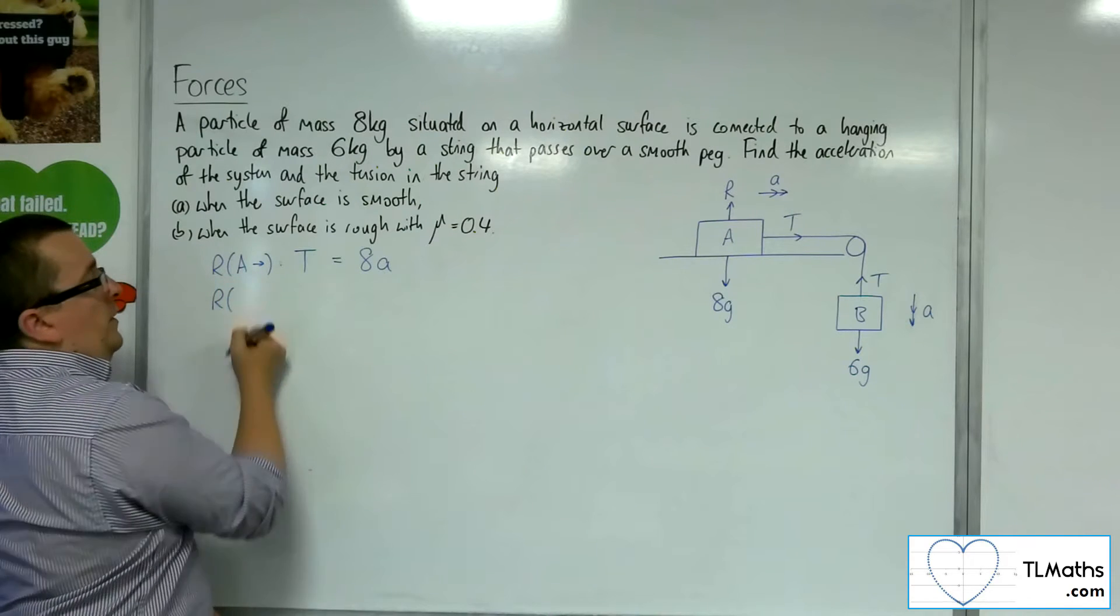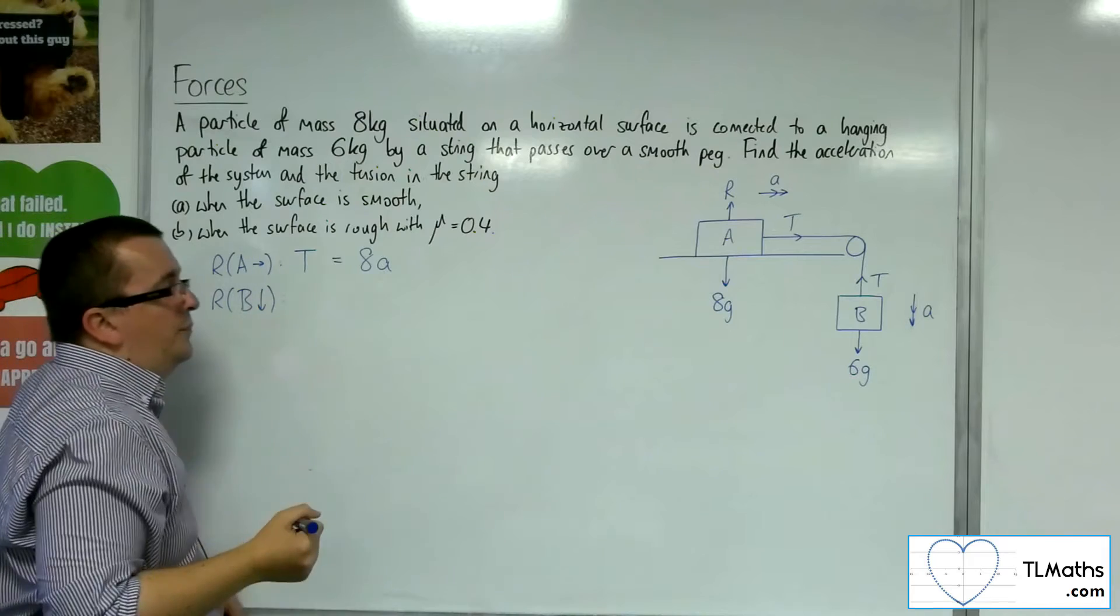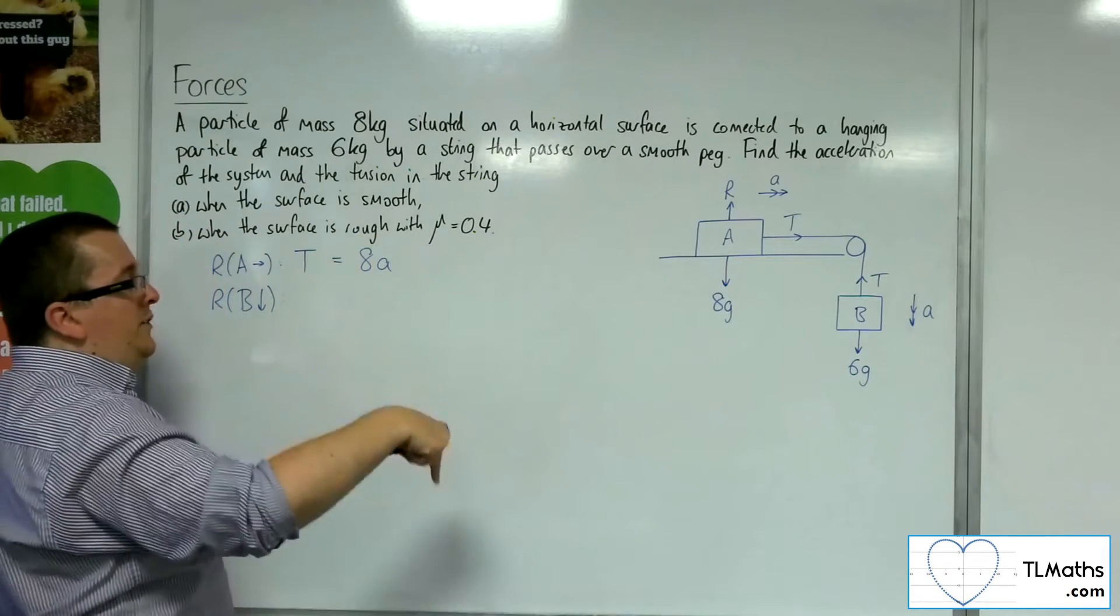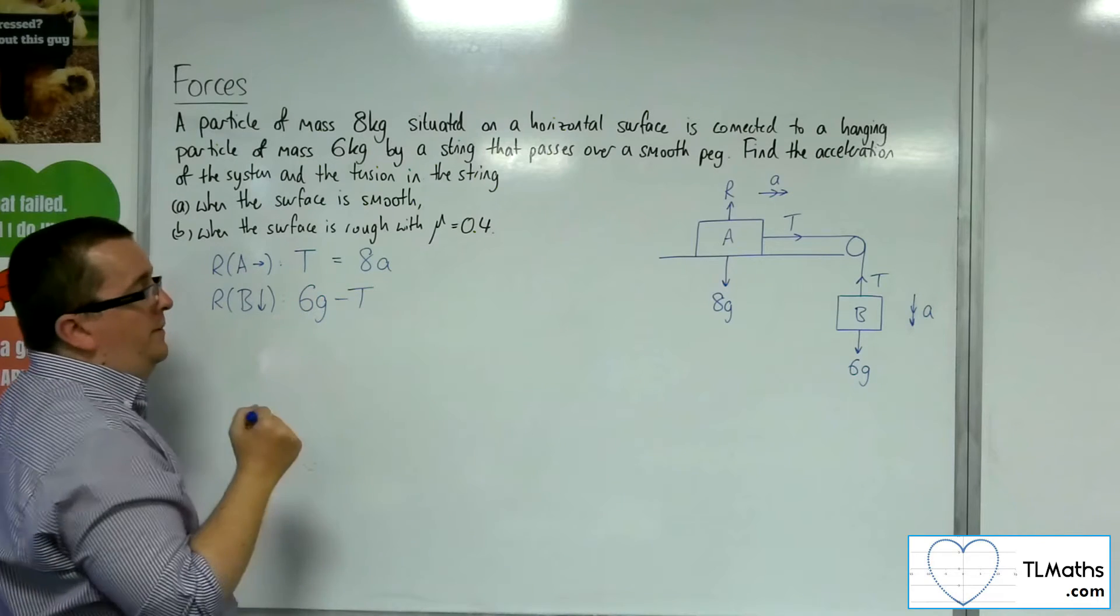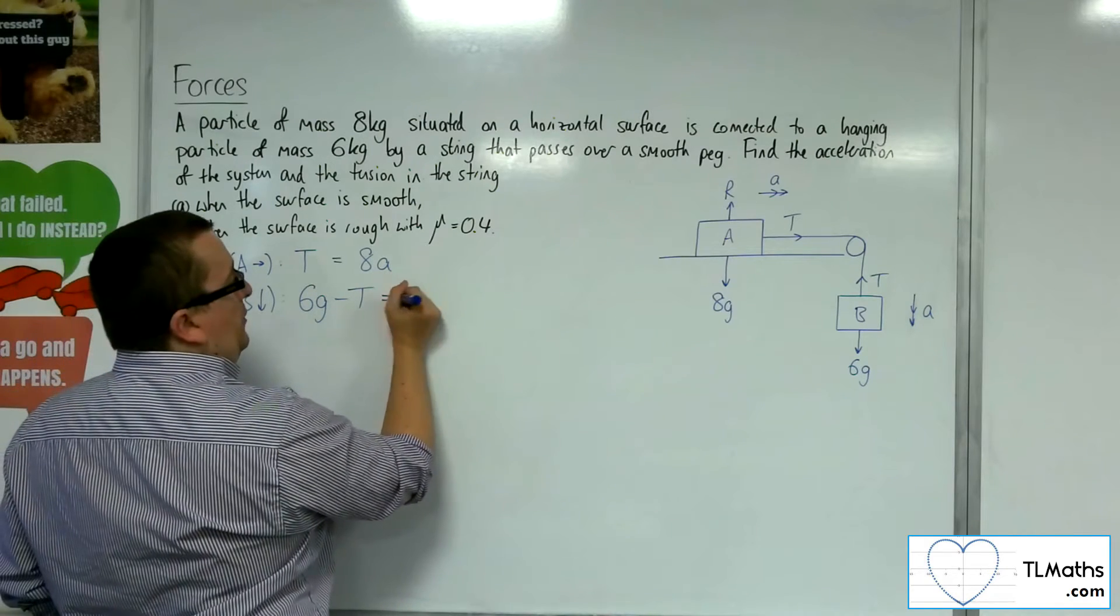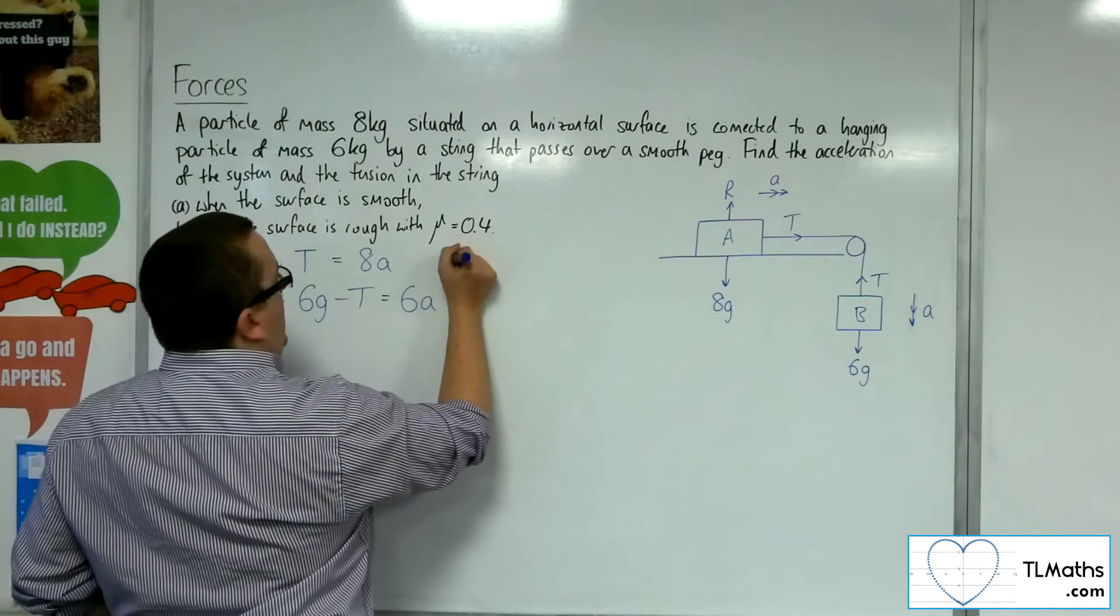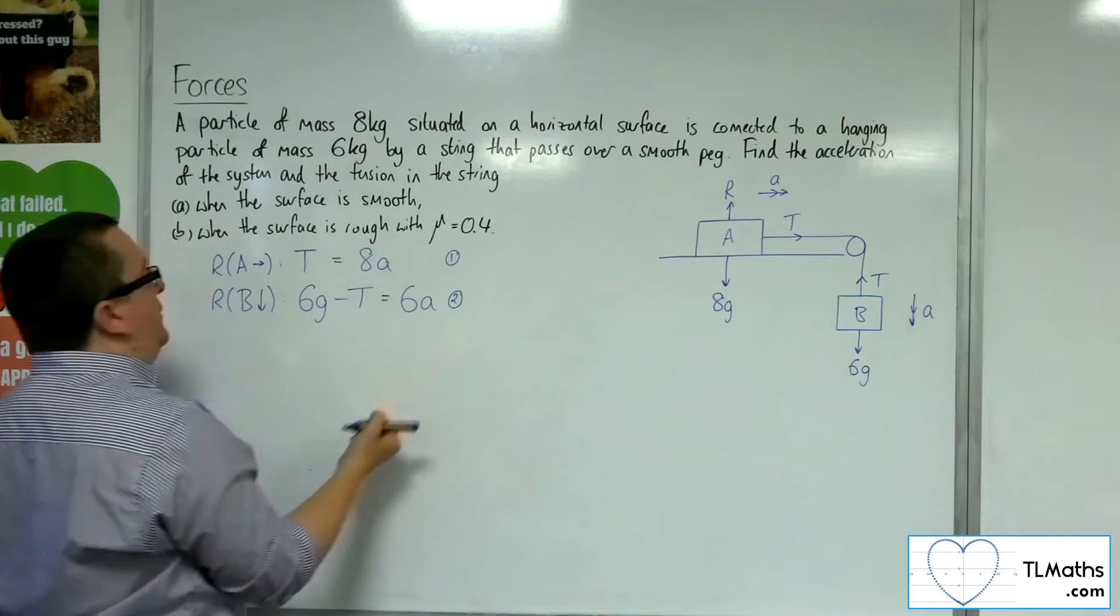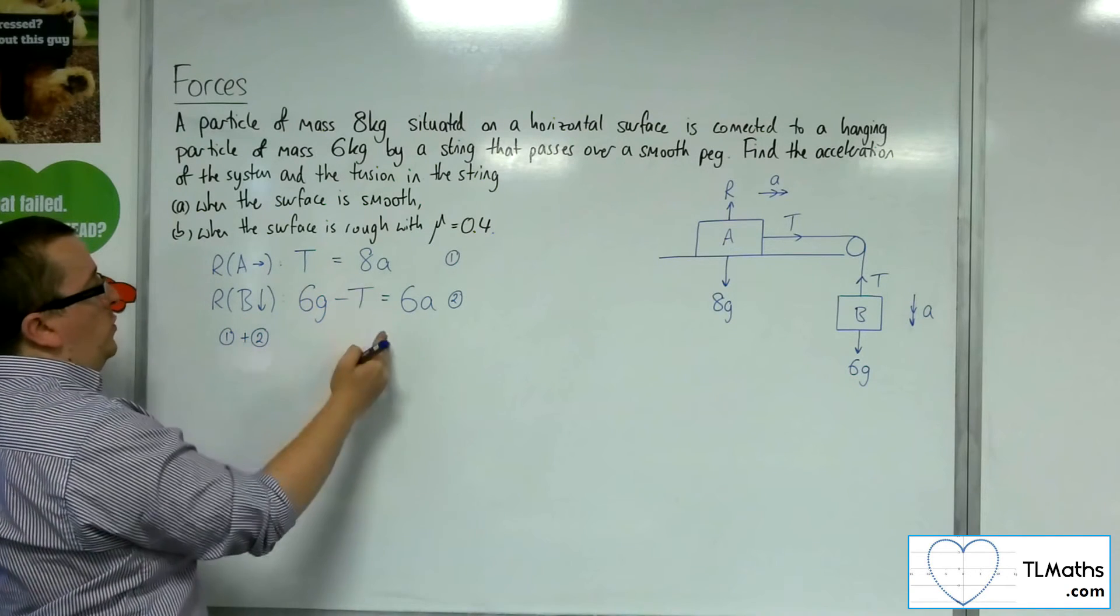Now if I resolve particle B going downwards, then I've got the weight working downwards, 6g. I've got the tension working against it, and that's got to be equal to the mass times the acceleration. So if I add these two equations together, the tension will cancel.